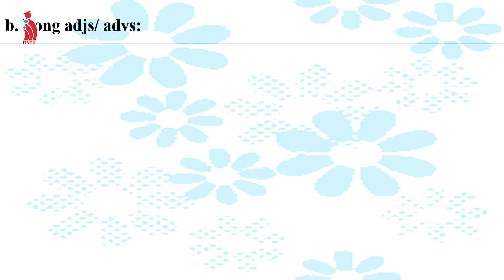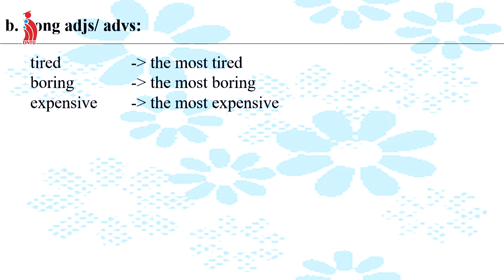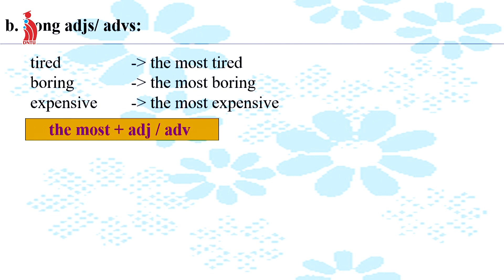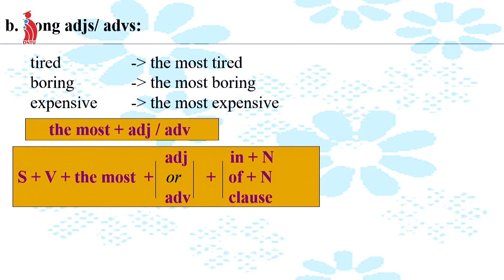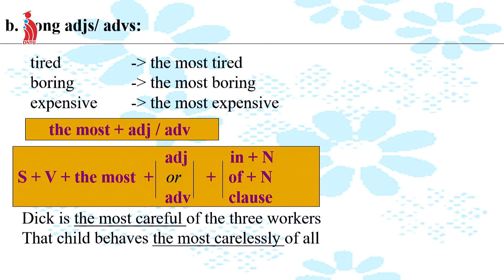For long adjectives or adverbs, use 'the most' + adjective/adverb: e.g., tired → the most tired, boring → the most boring, expensive → the most expensive. The structure is: Subject + Verb + the most + adjective/adverb + in/of + noun or clause. For example: 'Dick is the most careful of the three workers' or 'That child behaves the most carelessly of all.'